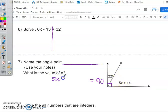So 5X plus 14 plus 22 equals 90. So I'm going to have y'all solve that.